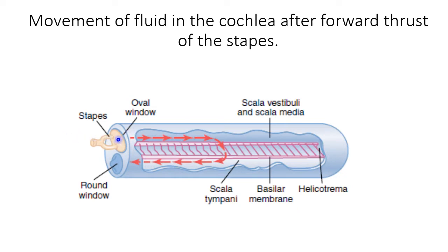This is a schematic diagram of an uncoiled cochlea, starting from the oval window and ending at the round window. This is the footplate of the stapes, which is connected with the oval window by an annular ligament. In this schematic diagram there is no Reissner's membrane shown, and this represents the scala vestibuli and the scala media as almost a single chamber because the Reissner's membrane is very thin.